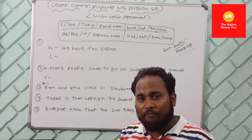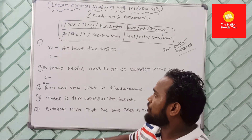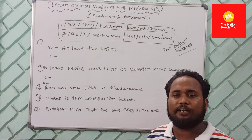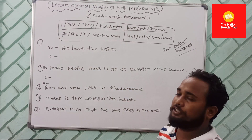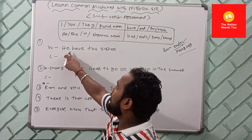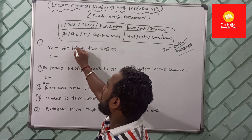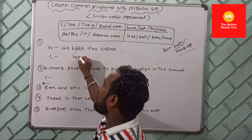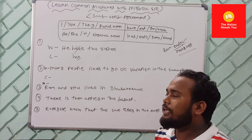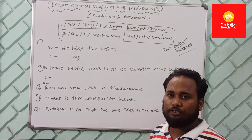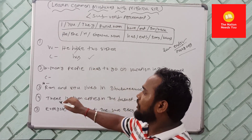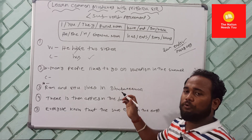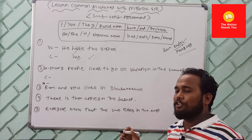Let's go to the exercise. 'He have two sisters' — what is wrong here? Since 'he' is there, instead of 'have' we are going to use 'has.' So the correct sentence is: 'He has two sisters.'